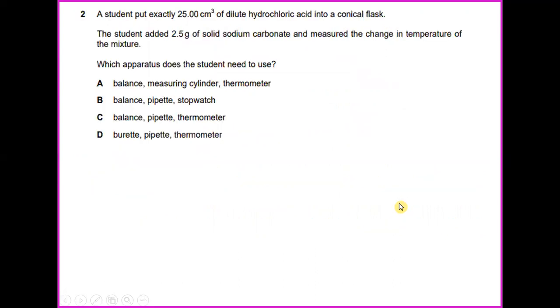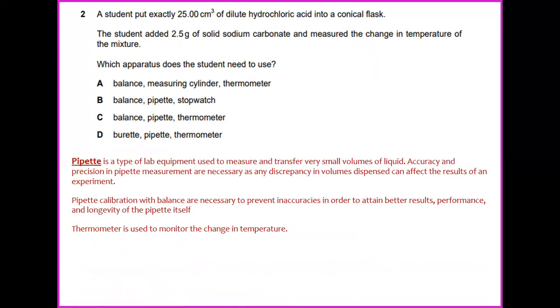Number 2. A student put exactly 25 cm cubed of dilute hydrochloric acid into a conical flask. The student added 2.5 grams of solid sodium carbonate and measured the change in temperature of the mixture. Which apparatus does the student need to use? A pipette is a type of lab equipment used to measure and transfer very small volumes of liquid. Accuracy and precision in pipette measurement are necessary as any discrepancy in volumes dispensed can affect the result of an experiment.